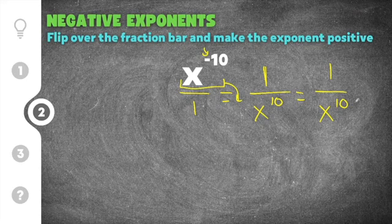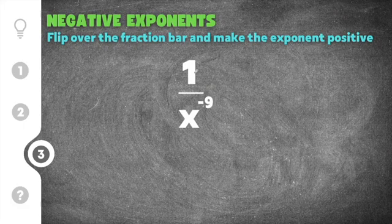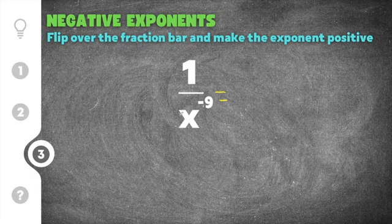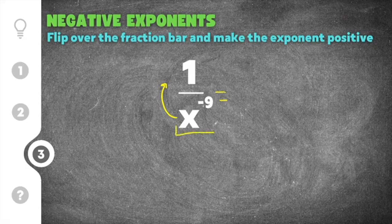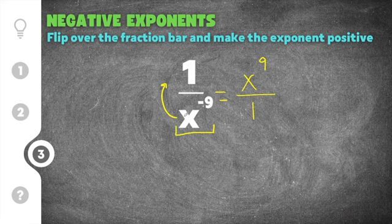Once your exponent is positive you know your answer has been simplified. Our last practice problem gives us one over x to the negative ninth power — this time the exponential term is in the denominator. The rule to get rid of the negative exponent still applies even though it's in the denominator. You can still flip it over the fraction bar and it will change the sign on the exponent from negative to positive. I take x to the negative ninth in the denominator, flip it over the fraction bar by keeping the base and changing the sign of the exponent to positive nine. The denominator becomes one as a placeholder. This gives us x to the ninth over one, which is just x to the ninth. The key takeaway is that even if the negative exponent is in the denominator, you can still flip it over the fraction bar and make the exponent positive.